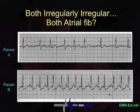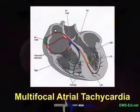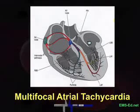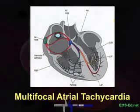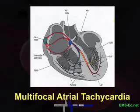What is going on here? The pacemaker is wandering all over the place. If the rate is less than 100, this is called a wandering atrial pacemaker. When the rate is over 100, we call it multifocal atrial tachycardia, or MAT.